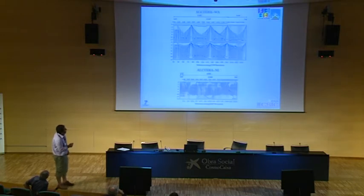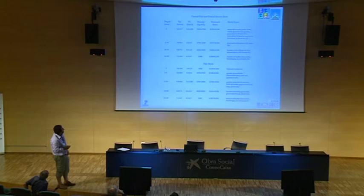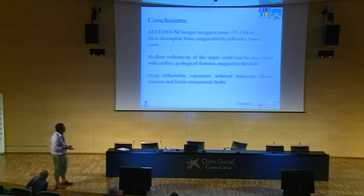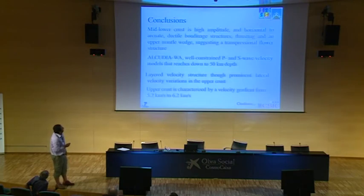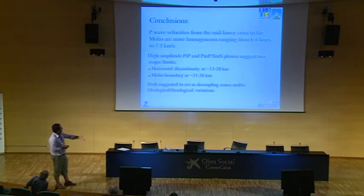We also put constraints on the composition of the Central Iberian Zone and the Tajo basin. We additionally calculated the Poisson ratios and densities, which very much complement the original results. The conclusions are that in the upper crust, deformation is pretty much homogenized, whereas in the mid-lower crust we need a décollement level. The wide-angle data provides velocity constraints, a horizontal discontinuity from 13 kilometers to 20 kilometers depth, and a Moho depth fluctuating from 30 kilometers to 36 kilometers.